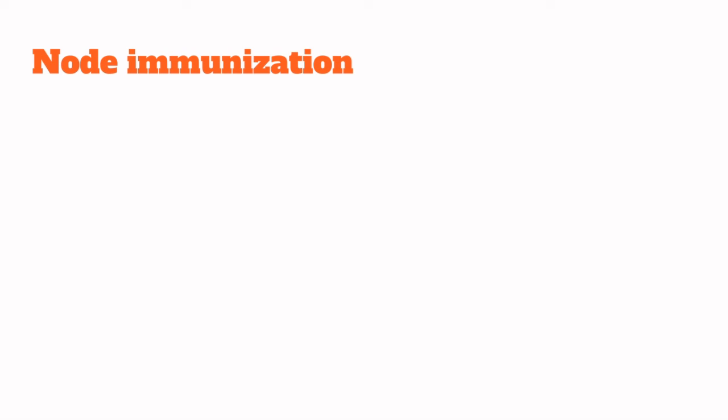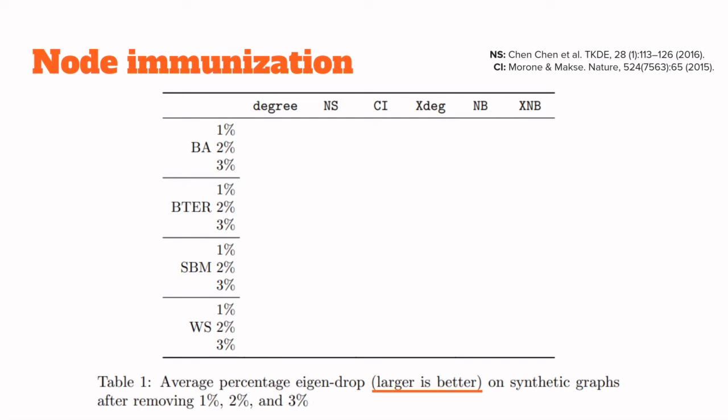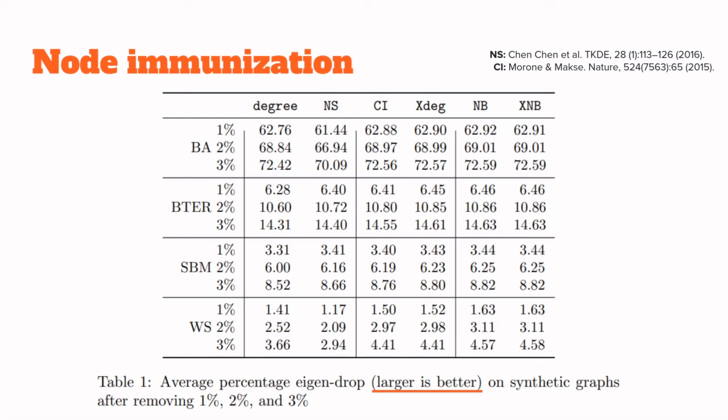Let's talk about the application to node immunization. This is a procedure where you are removing nodes one by one according to their centrality, in order to decrease the leading eigenvalue as much as possible. The table that I'm going to show you presents the percentage decrease of the eigenvalue, so larger is better, averaged over repetitions in different kinds of synthetic random graphs, after removing one, two or three percent of their nodes, using many different centrality measures. Here ns is the net shield algorithm and ci is the collective influence centrality, which is yet another centrality measure also based on the non-backtracking matrix. These are the results where you can see that degree is actually a very strong baseline for this task, and that our X-centralities are in general slightly better than the others, especially in this kind of random graphs, though the difference is statistically significant in all cases.